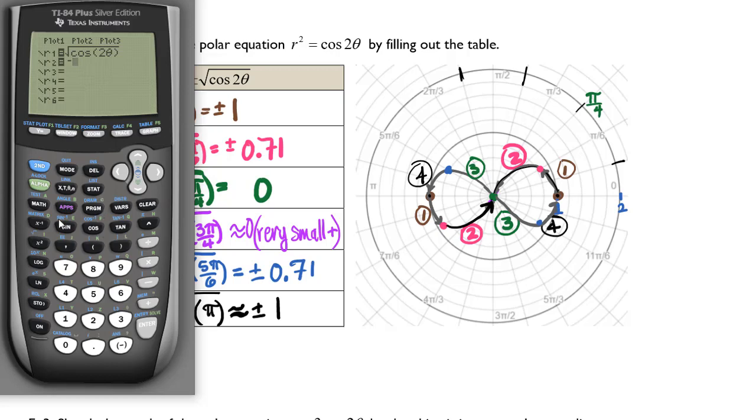I'm also going to enter the negative square root as a separate equation. So now I have two equations. The square root of cosine of 2 theta and negative square root of cosine of 2 theta.